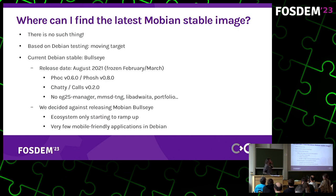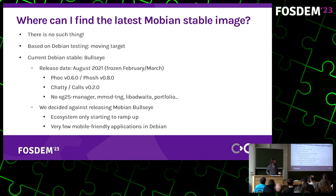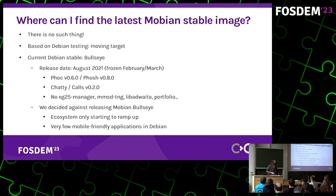A question we've been seeing a lot lately is: where can I find the latest Mobian stable image? The answer is you can't, because it doesn't exist yet. We target Debian testing, which is a moving target — you could think of it as a kind of rolling release distribution. The Debian testing distro is frozen every once in a while, about once every two years, and then moved on to Debian stable.